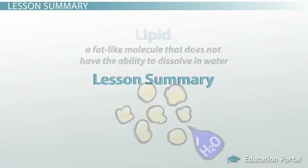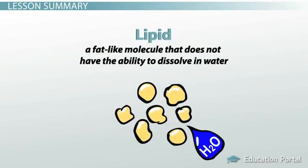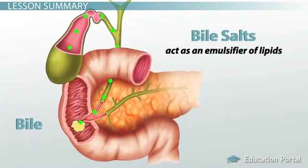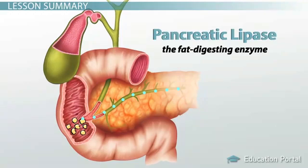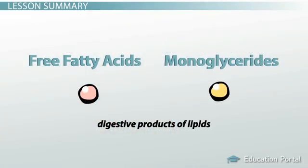A lipid is defined as a fat-like molecule that does not have the ability to dissolve in water. Lipids, or fat, go undigested in your digestive tract until they reach your small intestine, where they meet bile. Bile contains bile salts, which act as an emulsifier of lipids. This breaks the large fat droplets into smaller droplets that are then easier for the fat-digesting enzyme, pancreatic lipase, to digest. When pancreatic lipase acts on the small lipid droplets, it breaks them down into free fatty acids and monoglycerides, which are the two digestive products of lipids.